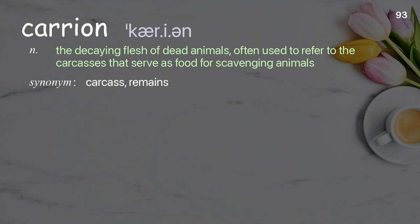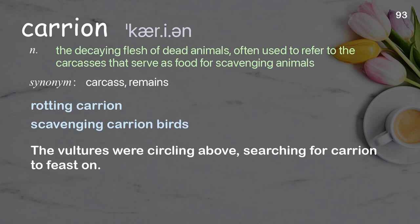Carrion: The decaying flesh of dead animals; the carcasses that serve as food for scavenging animals. Examples: rotting carrion, scavenging carrion birds. The vultures were circling above, searching for carrion to feast on.